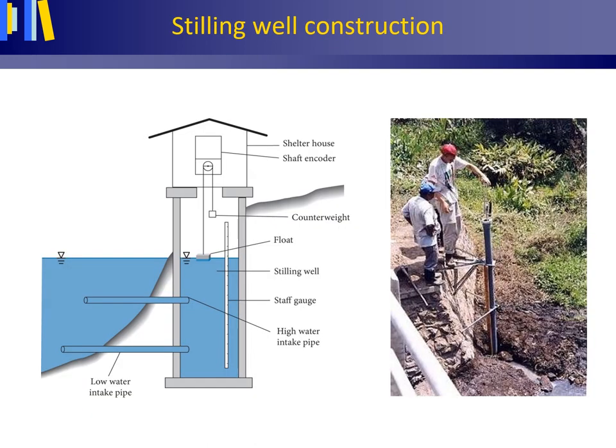A good way to continuously measure the water stage is a stilling well installation that is connected to a brook or small stream by water intake pipes. Such a setup has the advantage that oscillations due to the turbulence of the water flow are subdued. The photo to the right shows a similar setup where water levels are monitored in a small channel connected to the stream, also to subdue oscillations due to turbulence.